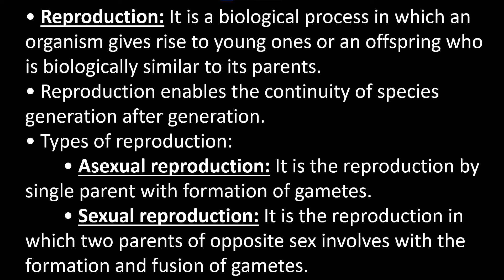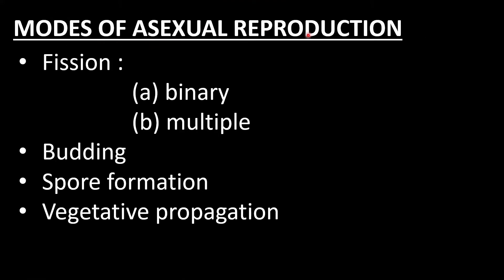There are two types of reproduction: asexual reproduction and sexual reproduction. Asexual reproduction involves a single parent without fusion of gametes — gametes may form but there is no fusion. Sexual reproduction involves two parents of opposite sex with formation and fusion of gametes. So asexual reproduction is uniparental and sexual reproduction is biparental.